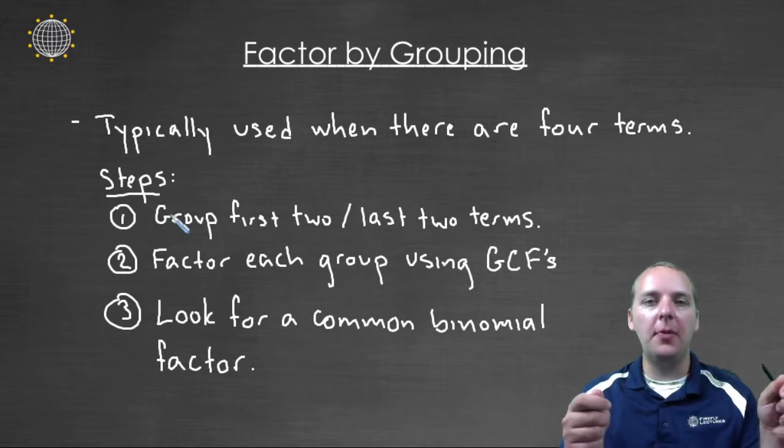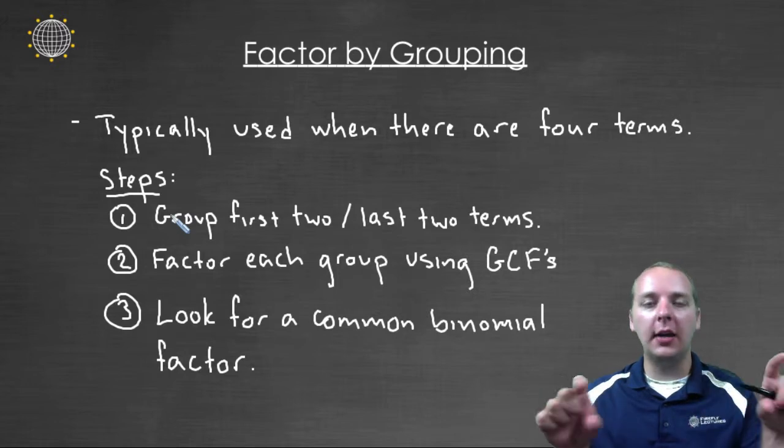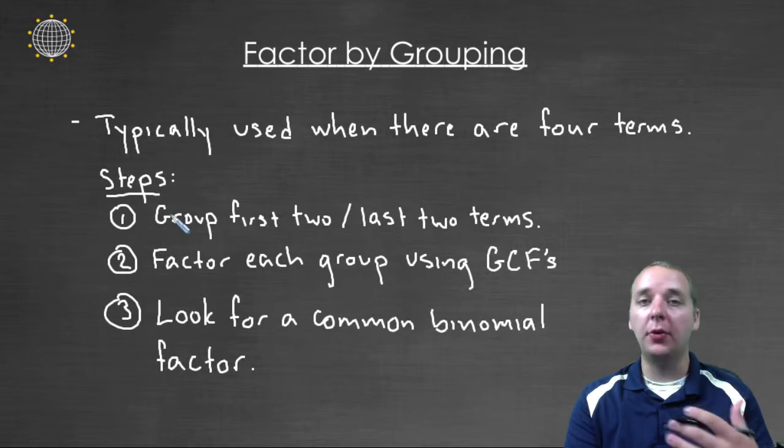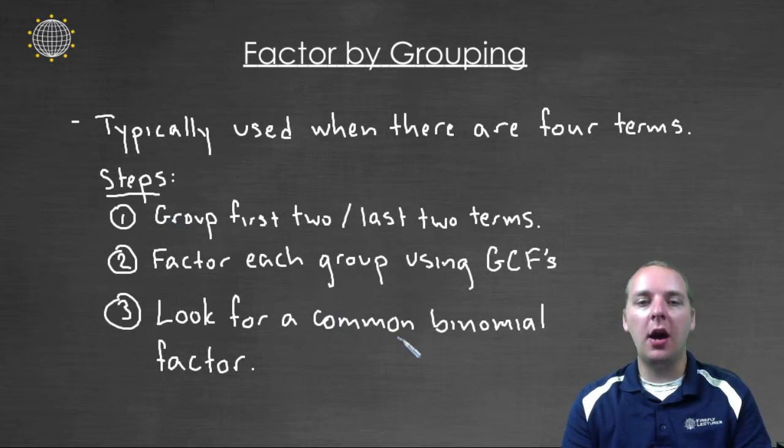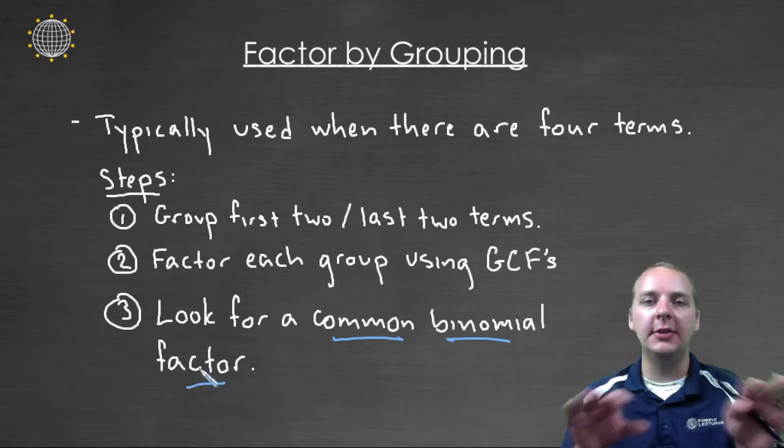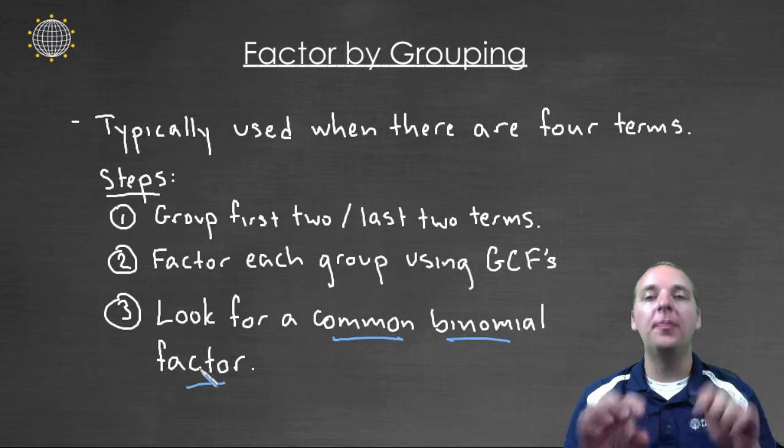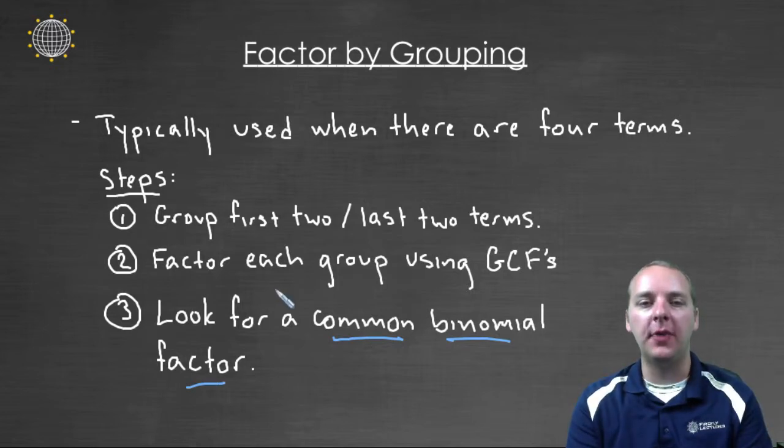Now if you factor those out the whole polynomial is not going to be factored because we still have these two big groups. But what will typically happen is if factor by grouping works you'll have a common binomial factor in each of the two groups. Then you can pull that common binomial factor out, then the whole polynomial will be factored.